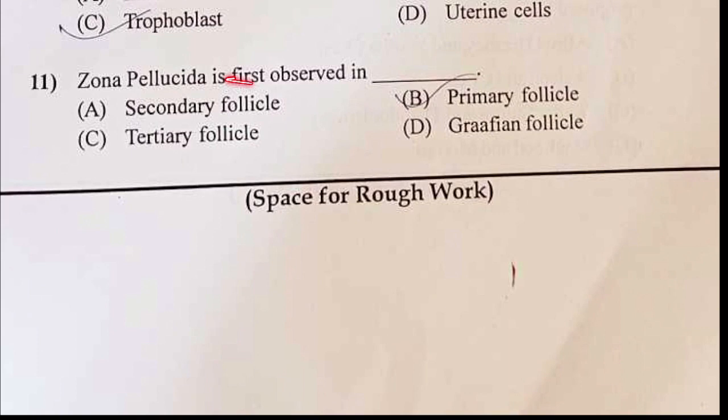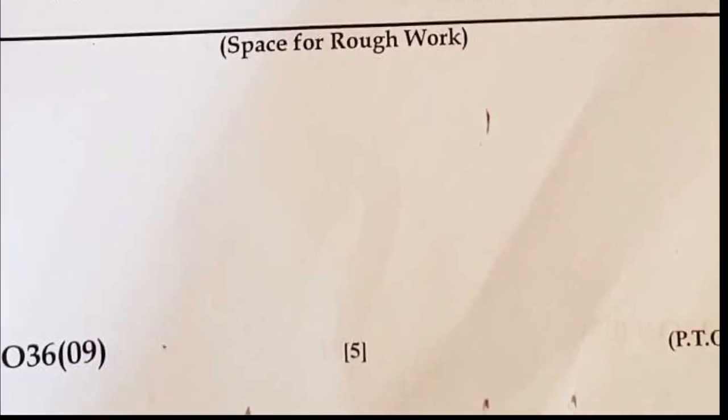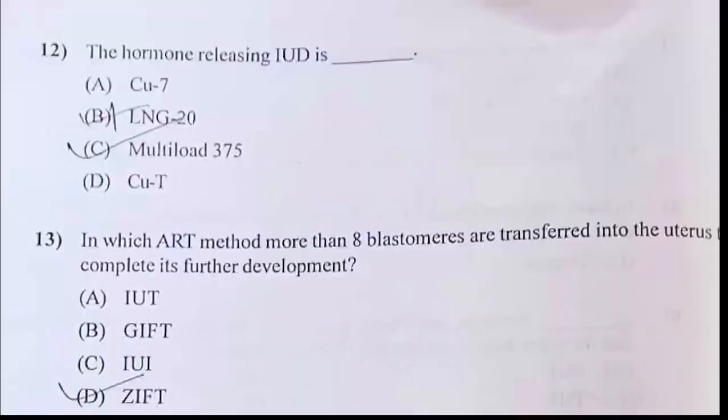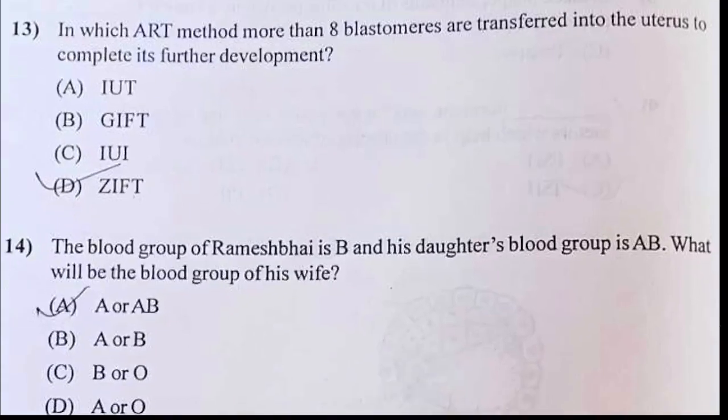Zona pellucida is first observed in Graafian follicles. Now the next answer should be the hormonal releasing IUDs — LNG-20.